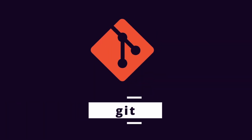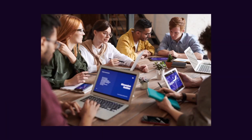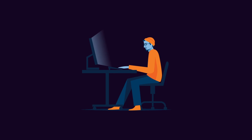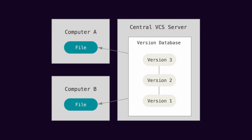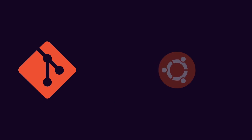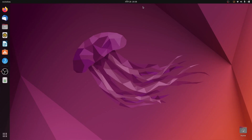Git is a version control system that maintains different versions of a project when we work in a team or as an individual. GitHub is a provider of internet hosting for software development and version control using Git. In this video, I'm going to show you how to install Git on Ubuntu and publish your project to GitHub using Git.